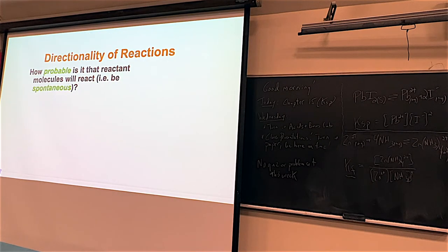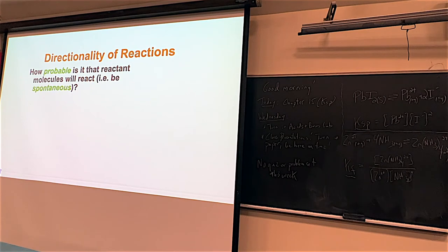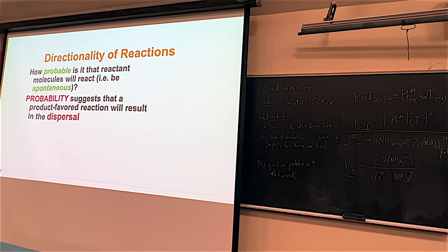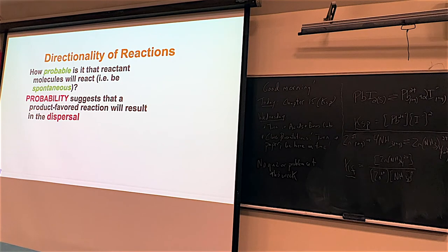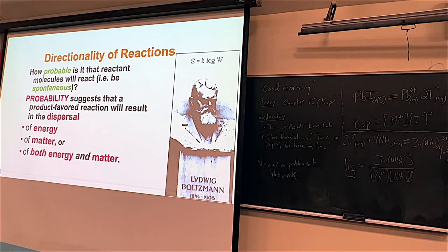All of this led scientists, especially at the end of the 19th century and beginning of the 20th century, to think about the probability that reactions will happen at all. Interestingly, when people studied reactions, they found that dispersal makes a reaction more probable. Dispersal means something concentrated is spread over a wider area. If a reaction involves dispersal of energy or matter, it is more likely to occur.